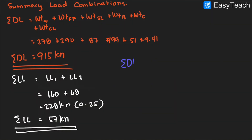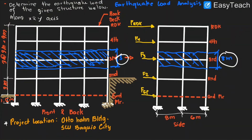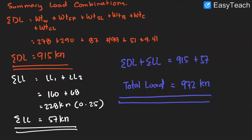For the summation of dead load and live load: 915 plus 57 kilonewton gives a total vertical load of 972 kilonewton. We will have to translate that as a lateral load on our structure based on the floor location — as shown in our first slide, 972 kilonewton distributed to each floor.